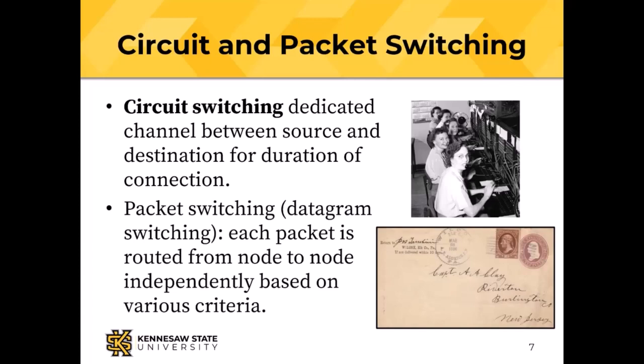Packet switching, also called datagram switching, routes each packet from one node to the next independently. An analogy: if you mail two letters to the same address in Los Angeles, they probably won't follow the same route, may get separated, and might not arrive at the same time or in the same order — but they come back together at the destination. That is packet switching.